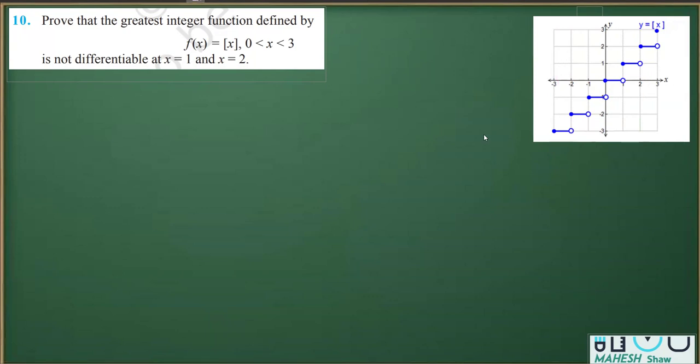We don't use the graph to explain this — we have to use the relation that if LHD equals RHD at x = 1, we say it is differentiable, else not. In this case we have to prove that it is not differentiable at x = 1.